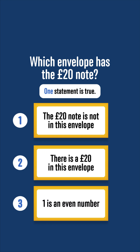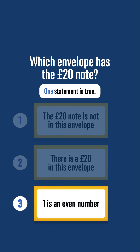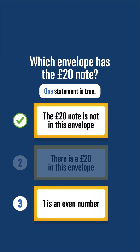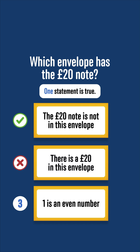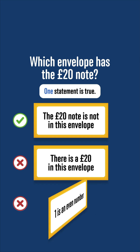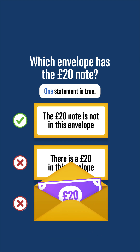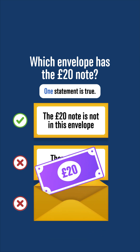Hence, the £20 note must be in envelope 3. In this case, the statement on envelope 1 is true, because the £20 note is not in envelope 1. The statement on envelope 2 is false, because the £20 note is not in that envelope. And the statement on envelope 3 is always false. So this is consistent with one statement being true, and it must be that the £20 note is in envelope 3.